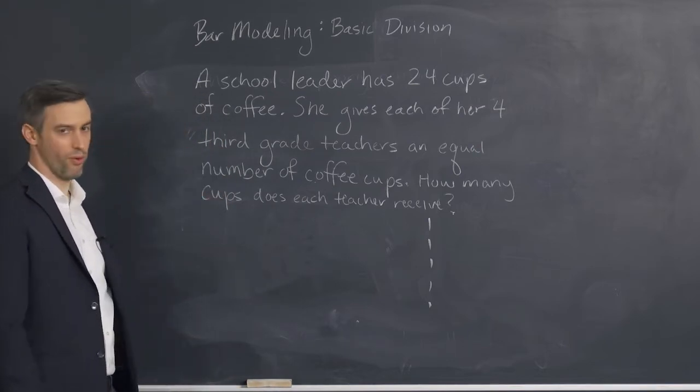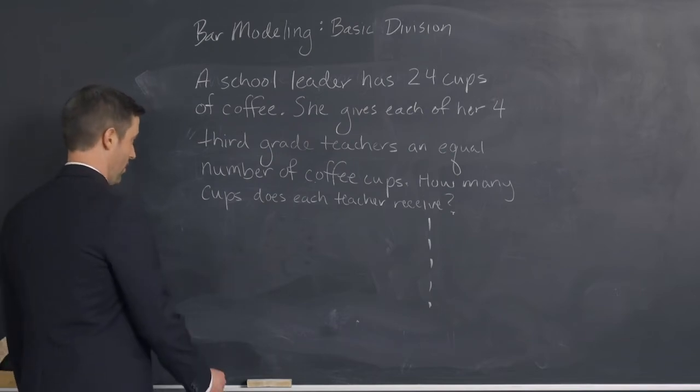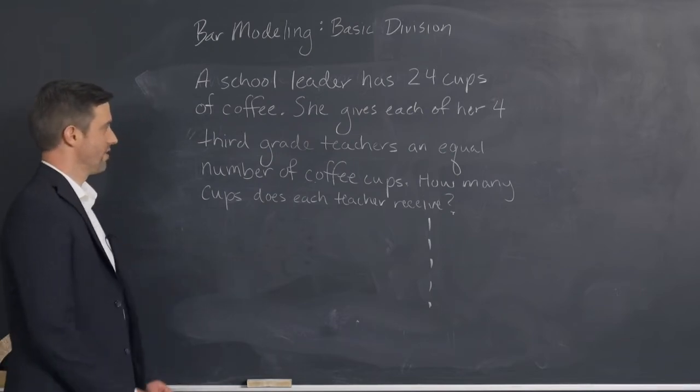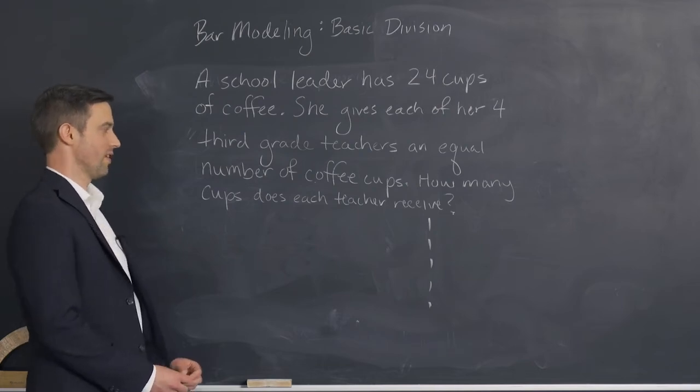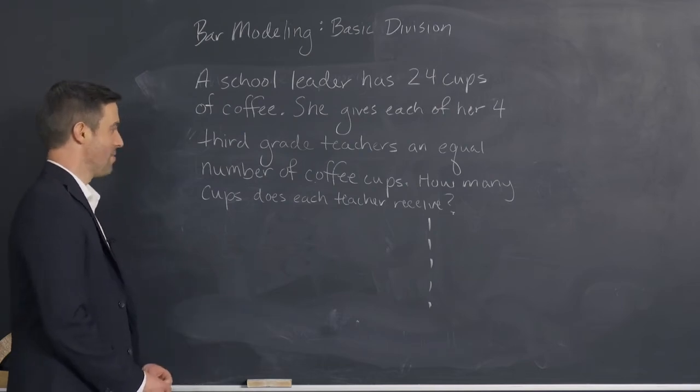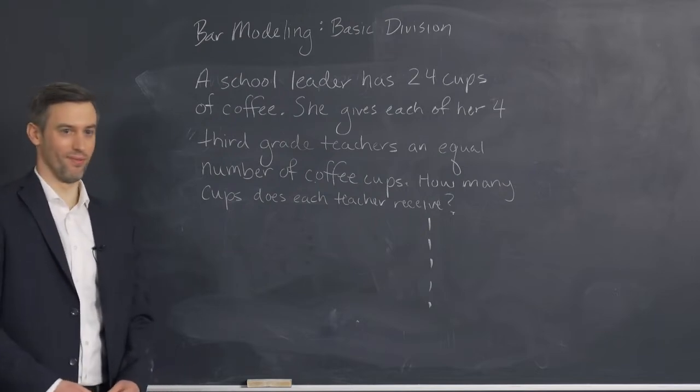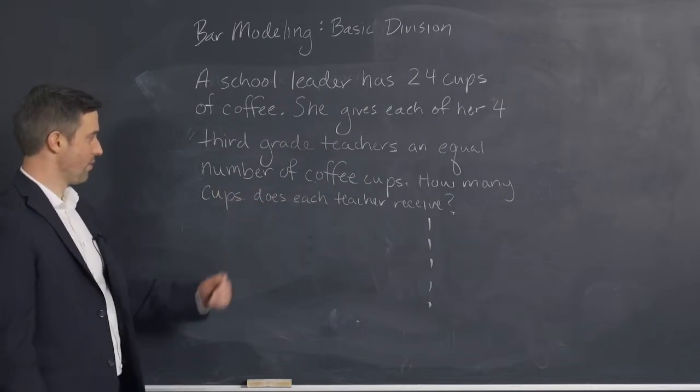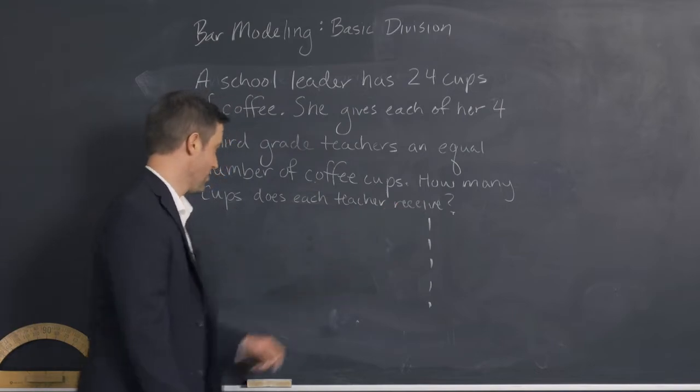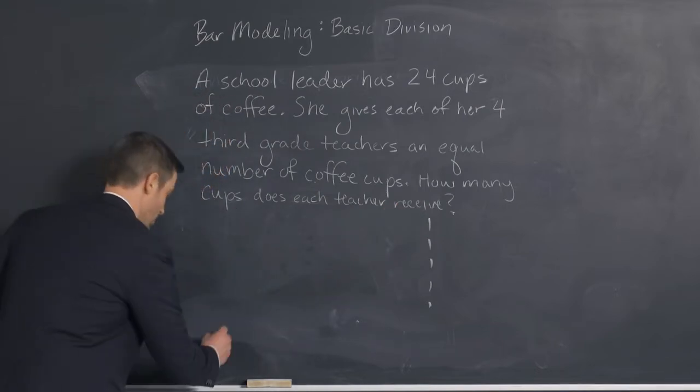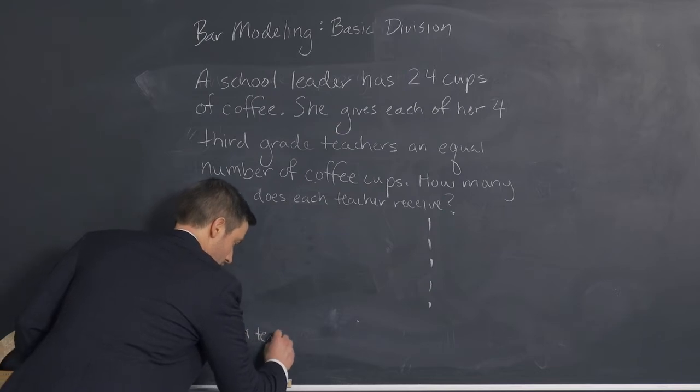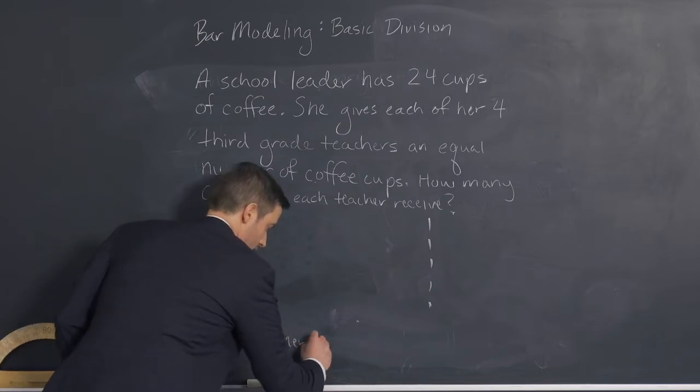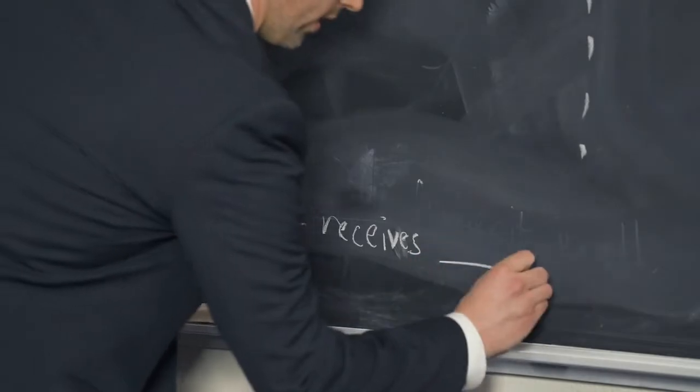A school leader has 24 cups of coffee. She gives each of her four third grade teachers an equal number of coffee cups. How many cups does each teacher receive? So we've read it all the way through. Now we're going to restate the question in the form of a sentence. Each teacher receives blank cups.